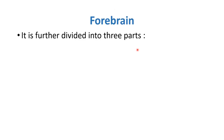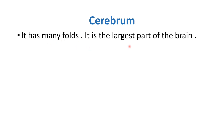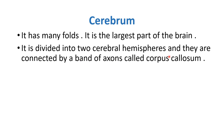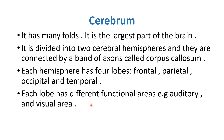The forebrain is further divided into three parts: number one is the cerebrum, the largest part; then there is the thalamus; and then the limbic system. The cerebrum has many folds, is divided into two cerebral hemispheres connected by a band of axons called the corpus callosum. Each hemisphere has four lobes: frontal, parietal, occipital, and temporal. Each lobe has different functional areas such as auditory and visual areas.